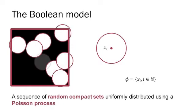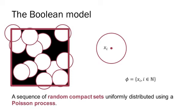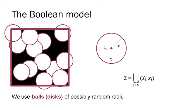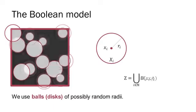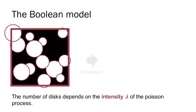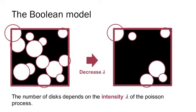The Boolean model corresponds to a sequence of random compact sets uniformly distributed with an underlying Poisson process. Our model is defined using disks of possibly random radii. The number of disks in a given region is defined by the intensity, lambda, of the Poisson process.